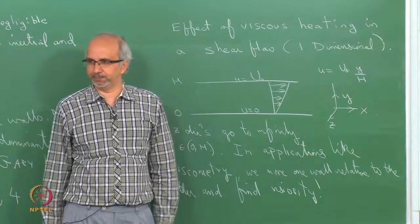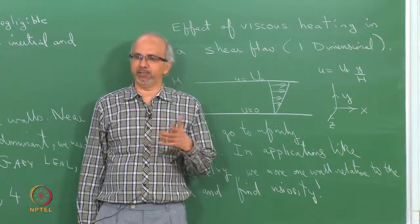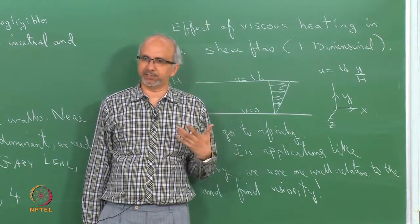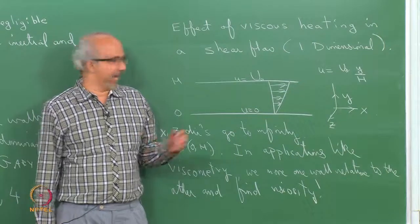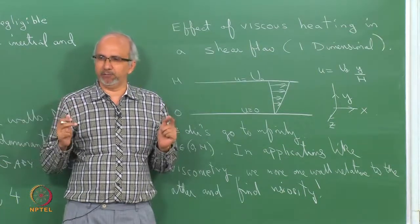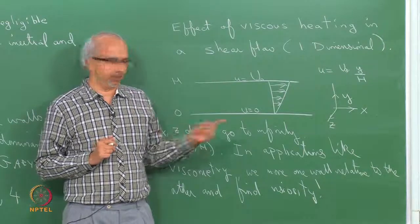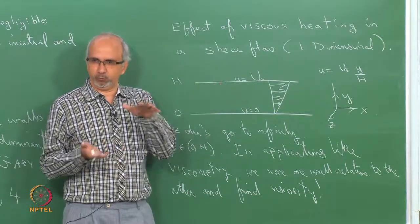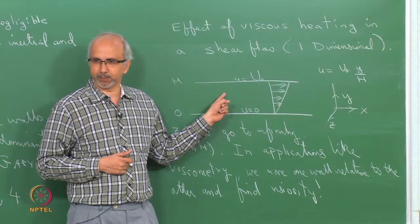Suppose your fluid happens to be very viscous — say you are trying to measure the viscosity of oil. High viscosity, like friction, is going to generate a lot of heat. When you move the wall there is heat generated in the form of a viscous dissipation term. Normally we would neglect this term. As a result of viscous dissipation, heat is generated and although the temperatures of the lower and upper walls are constant at room temperature, there will be a temperature profile induced inside.